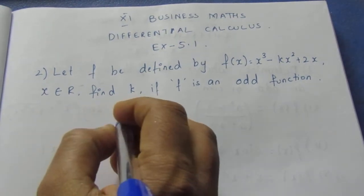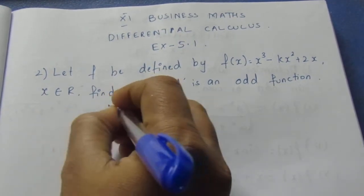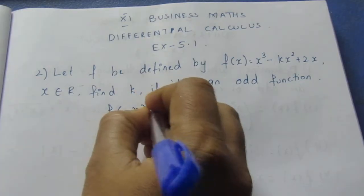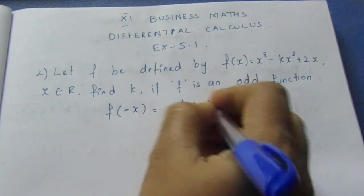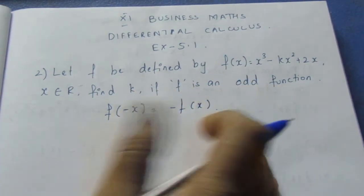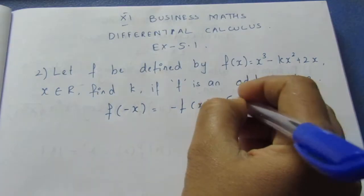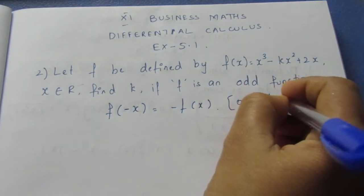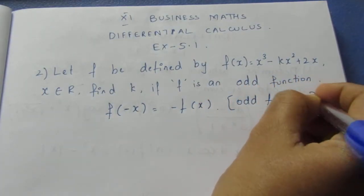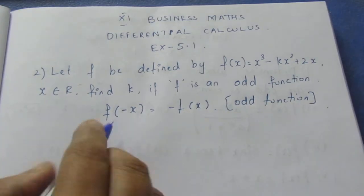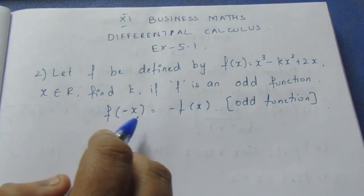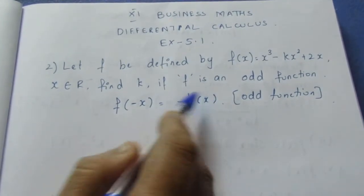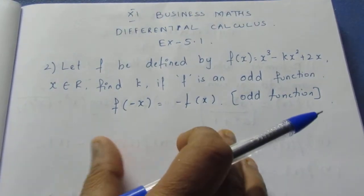Odd function — what is the odd function? f(-x) = -f(x). This is the odd function. So first, we will find f(-x) and verify it equals minus f(x).